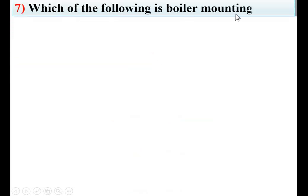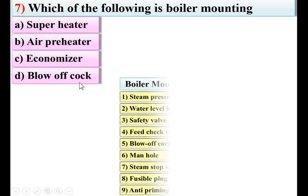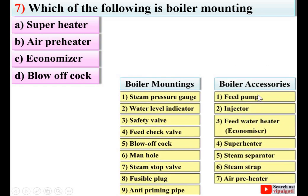Which of the following is a boiler mounting? Options: superheater, air preheater, economizer, blow of coke. Considering the figure for boiler mountings and boiler accessories — superheater is a boiler accessory, air preheater is also a boiler accessory, economizer is also a boiler accessory, but blow of coke is in the category of boiler mountings. So D is the right answer.